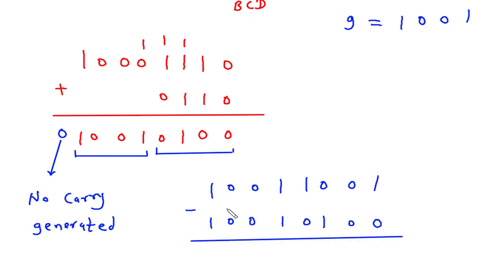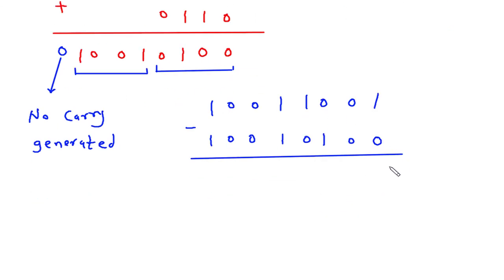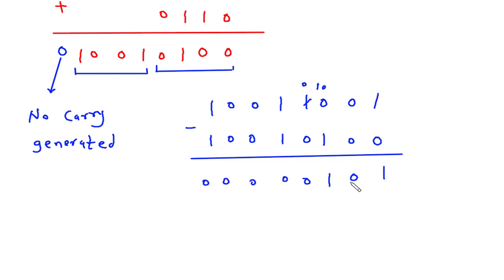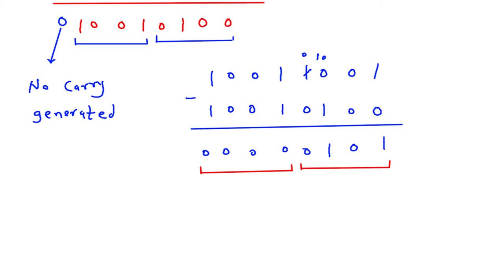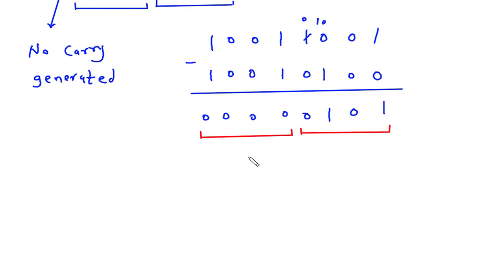Performing the subtraction bit by bit: 1 minus 0 is 1, 0 minus 0 is 0, then we need to borrow — this becomes 10 minus 1 is 1, and 0 minus 0 is 0. Continuing through all bits. Grouping the result into sets of 4, using the 8421 code: the first group is 0 and the second group has 0100 which is 4 plus 1 = 5.